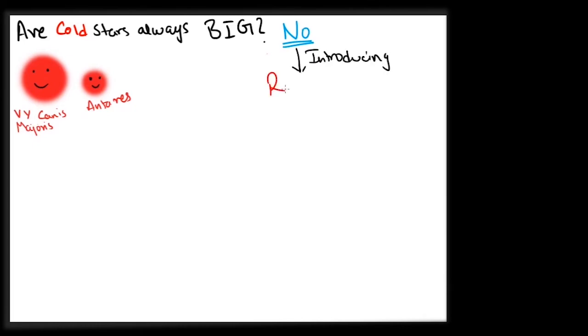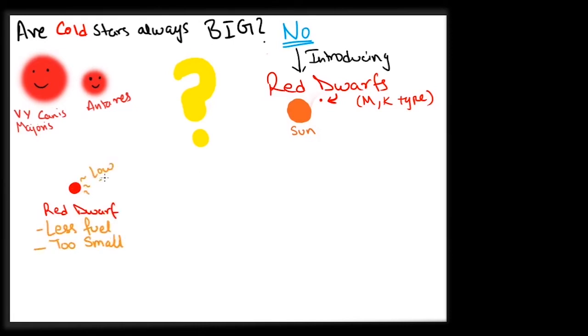There exist stars called red dwarfs, which are much smaller than the Sun and belong to the M and K-type. But why is there such a confusion? Well, stars like red dwarfs are too small to fuse hydrogen in their cores, slowly releasing less energy and hence less temperatures.